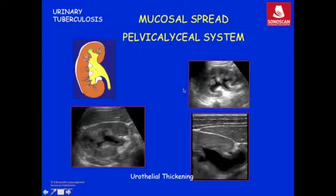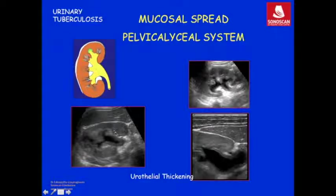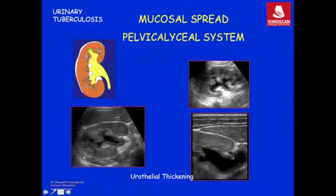The infection spreads to the pelvicalyceal system with occurrence of granulomas in the urothelium. With a conventional convex probe you see the urothelial thickening, and with a high frequency probe you see the renal pelvis and calyces with urothelial thickening of the renal pelvis much more clearly.